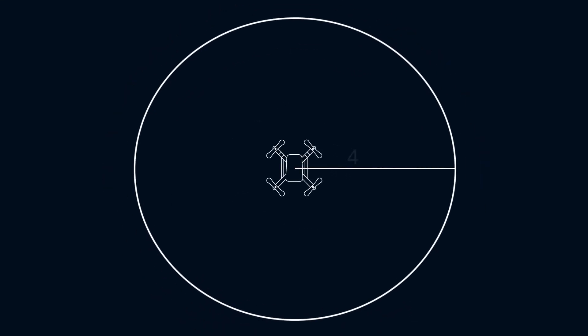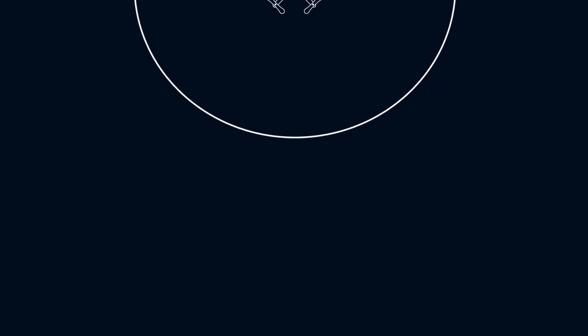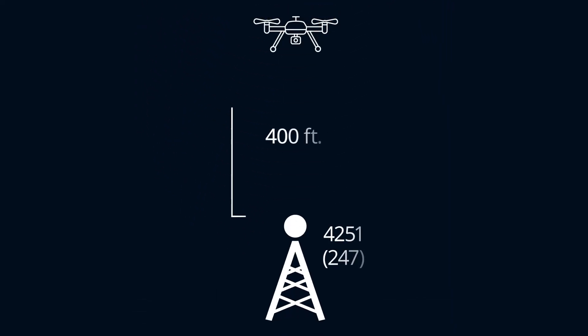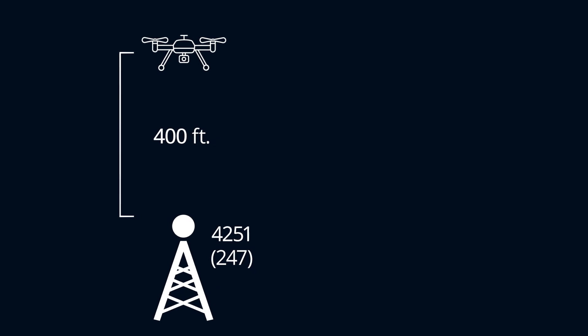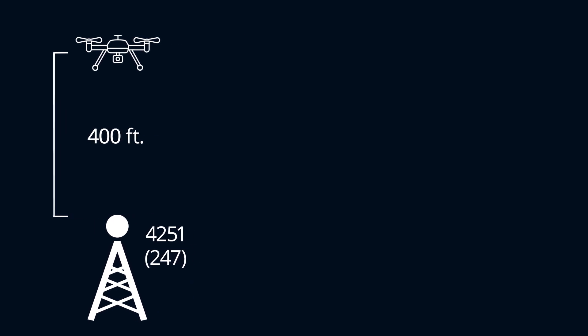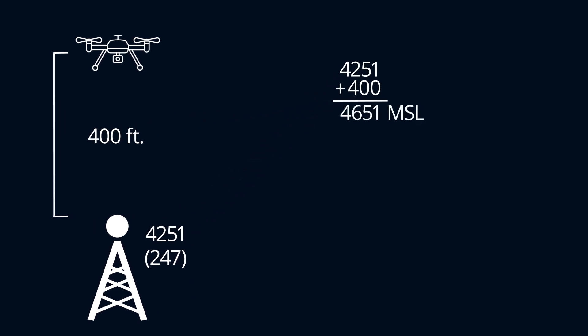The exception found in this question is that within a 400-foot radius you can fly 400 feet above an object. The answer for flying over this particular object is 4,651 feet mean sea level, which is also 647 feet above ground level.